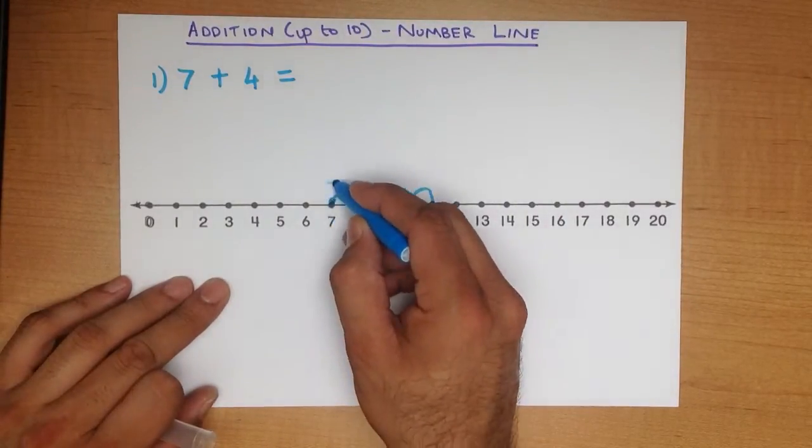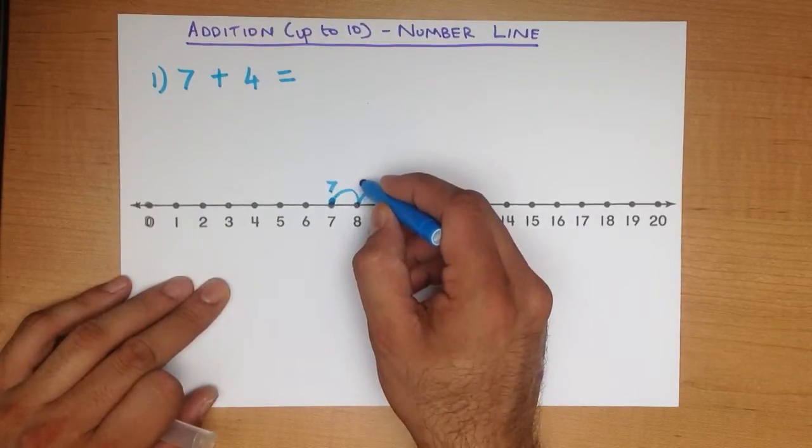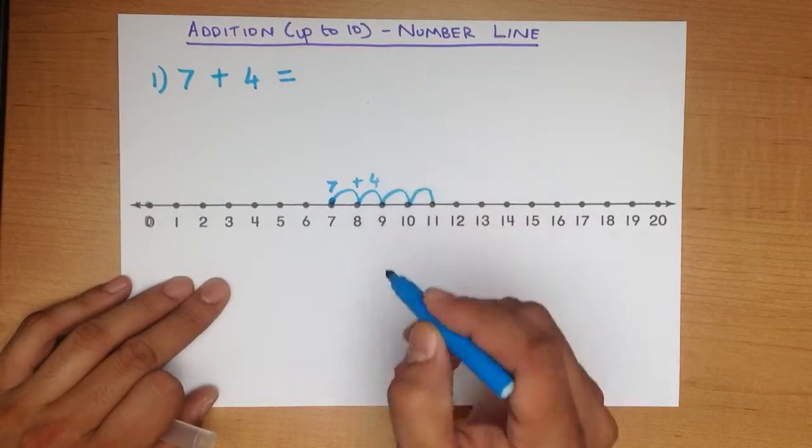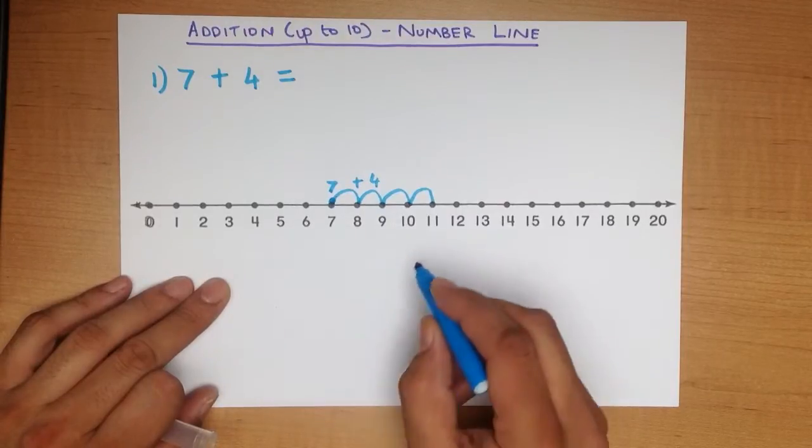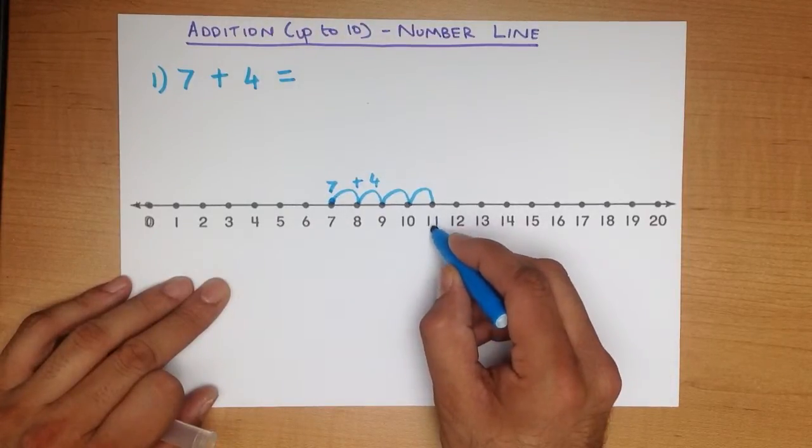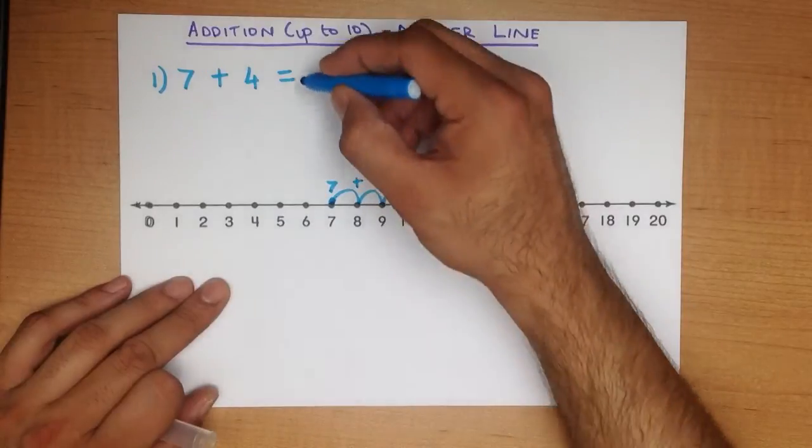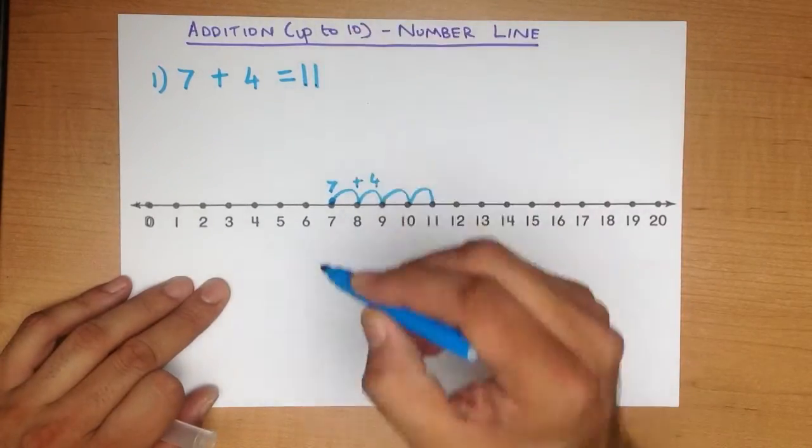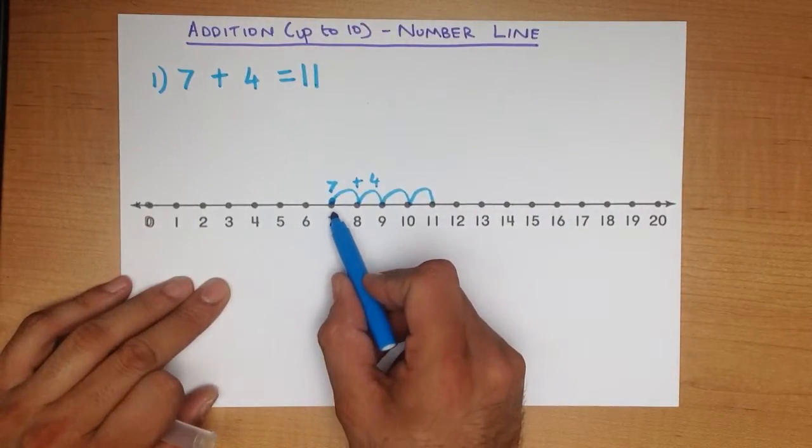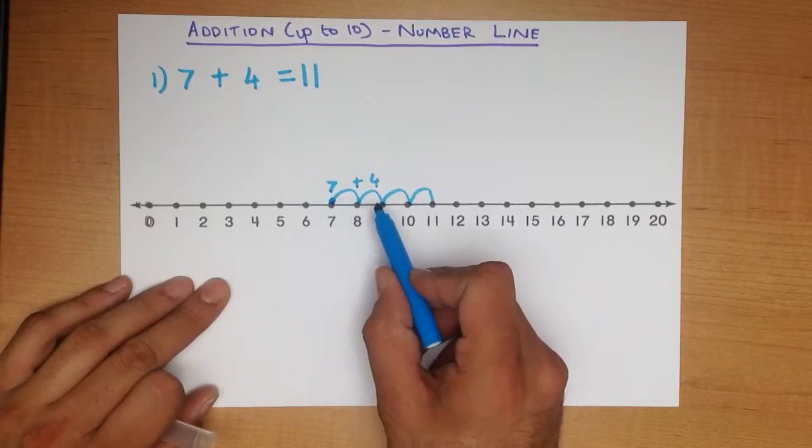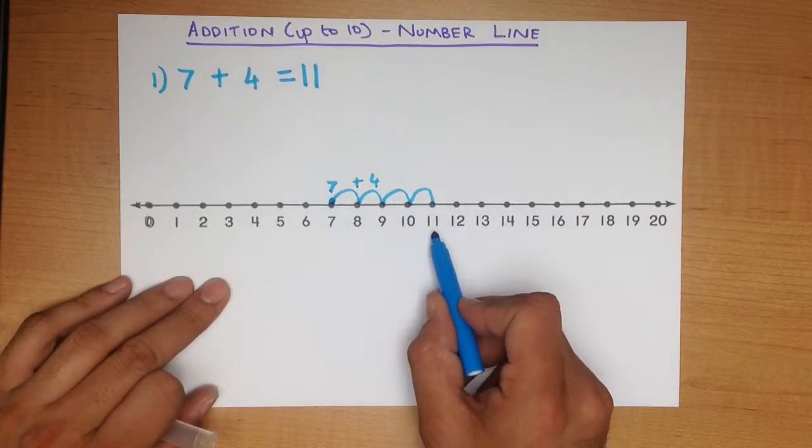So we started at 7, we made 4 jumps. What number did we finish at? We finished at number 11. And that's our answer. 7 plus 4, 1, 2, 3, 4 is 11. That was nice and easy.